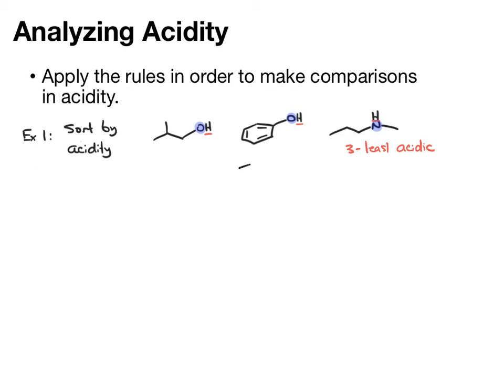The conjugate base of this acid is going to be O-, that negative charge is next to a pi bond, and you can move that through resonance. So, resonance is going to make this one the most acidic, and then this one will fall in the middle.